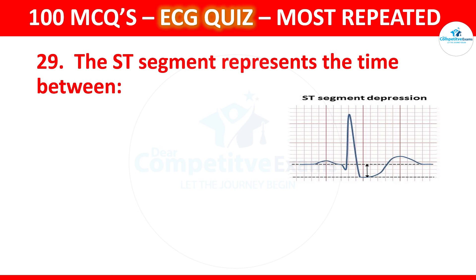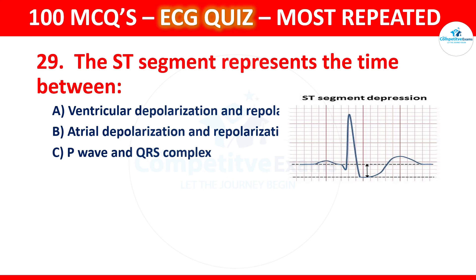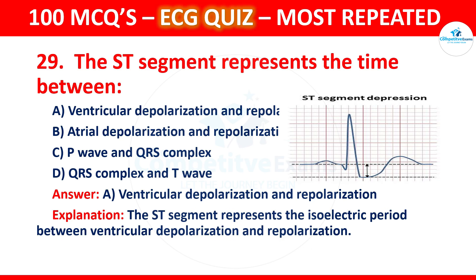Question 29: The ST segment represents the time between which two events? Options are ventricular depolarization and repolarization, atrial depolarization and repolarization, P wave and QRS complex, or QRS complex and T wave. The correct answer is ventricular depolarization and repolarization. The ST segment represents the isoelectric period between ventricular depolarization and repolarization.